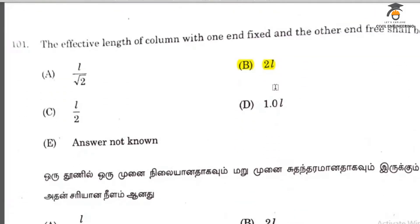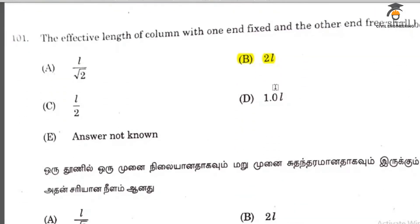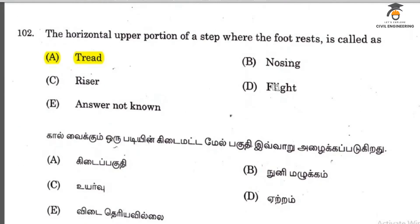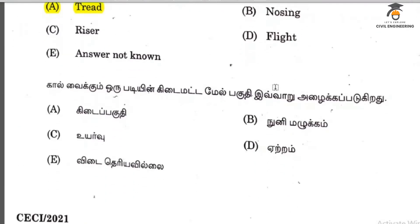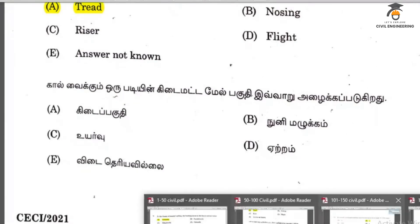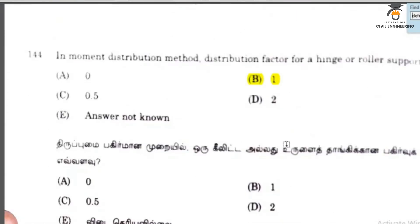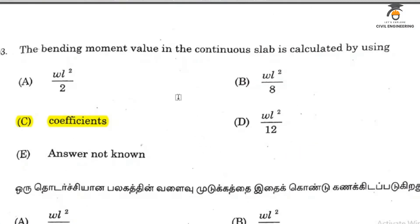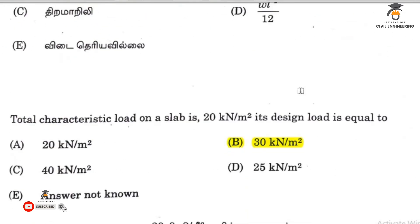The effective length of a column with one end fixed and the other end free is 2L. The bending moment value in a continuous slab is calculated using coefficients.